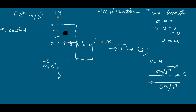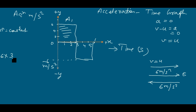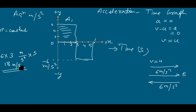The third most important information we get from the acceleration-time graph is that the area under the curve gives the velocity. For example, if the area under the curve is 6 multiplied by 3, that gives 18. The unit of acceleration is meter per second squared, and the unit of time is second — one second cancels, giving 18 meters per second, which is the unit of velocity.